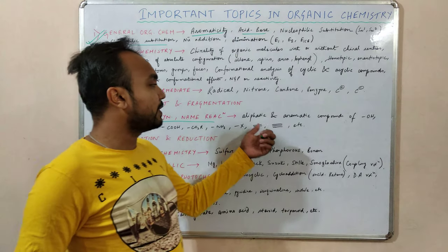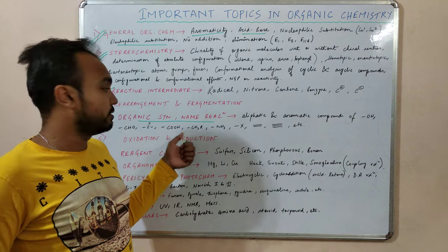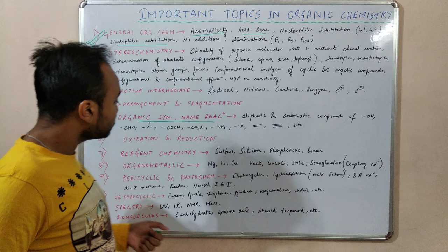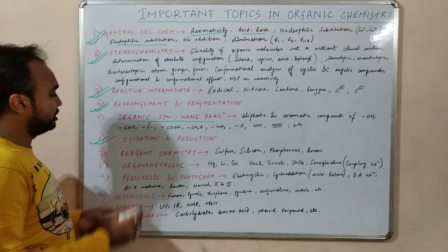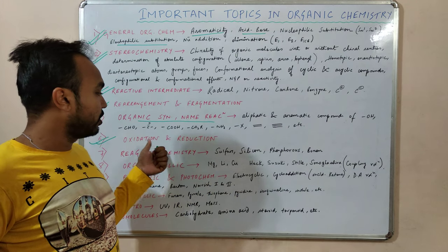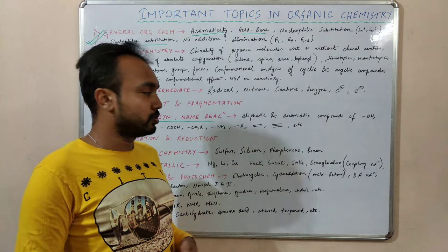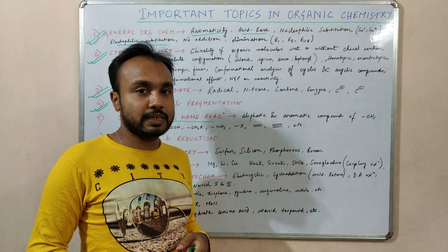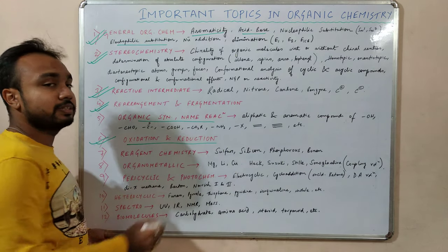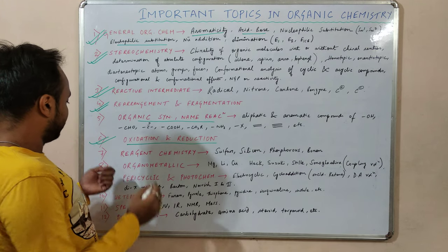Next comes organic synthesis and named reactions. In this part we will study aliphatic and aromatic compounds of alcohols, aldehydes, ketones, acids, esters, amines, halo-compounds, alkenes, and alkynes. Then comes the vast part of organic chemistry — oxidation and reduction — which consists of a lot of reactions that I will cover one by one, discussing each specific reaction in the later stage of the video.